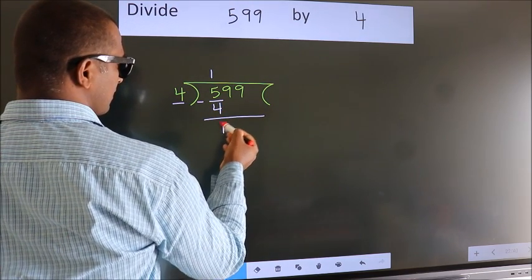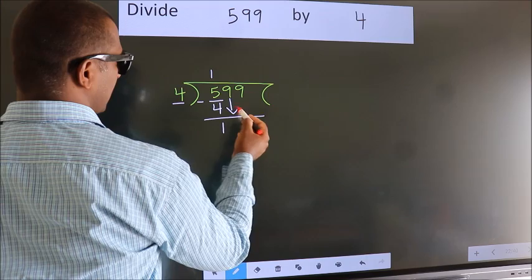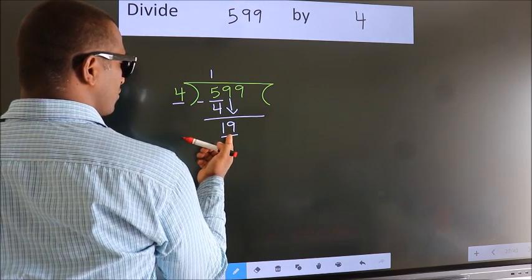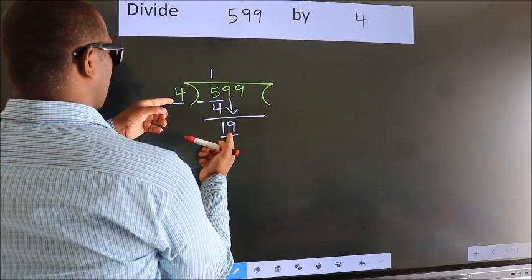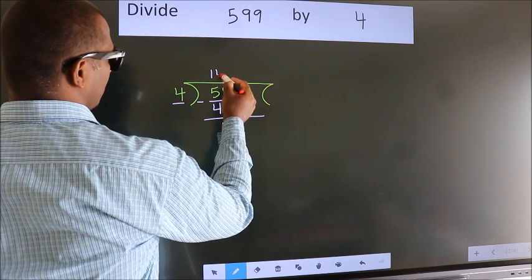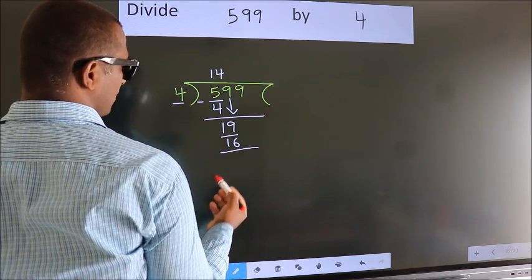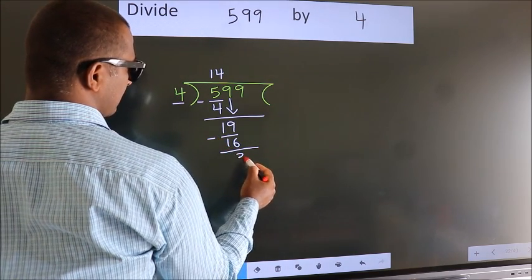After this, bring down the beside number. So 9 down. So 19. A number close to 19 in 4 table is 4 fours 16. Now we subtract. We get 3.